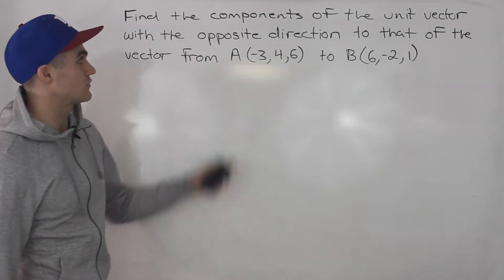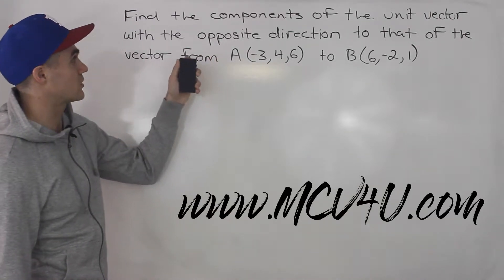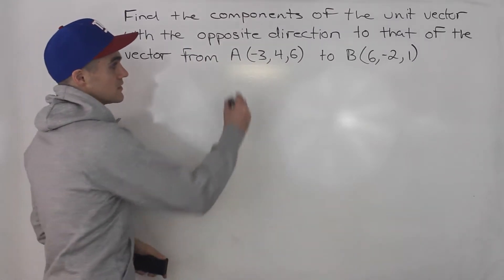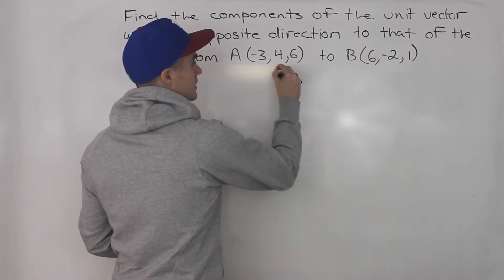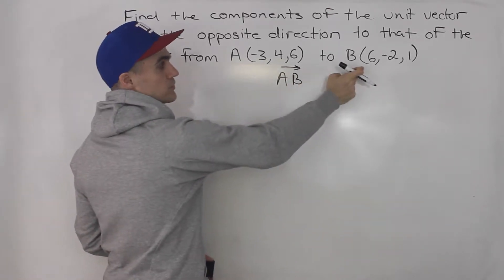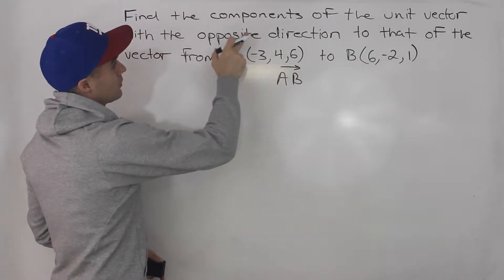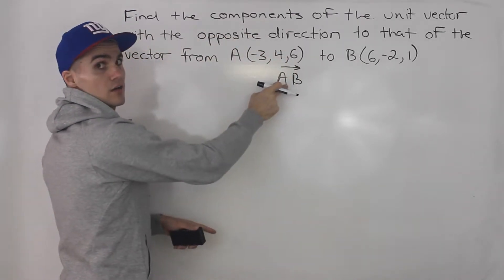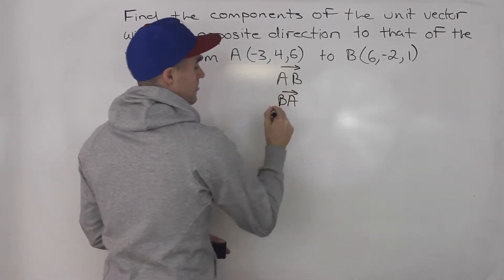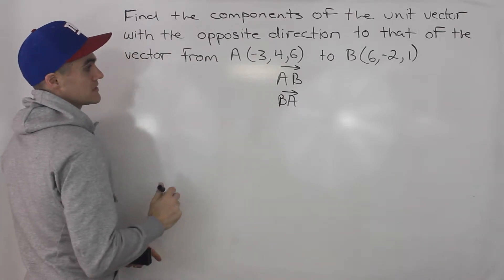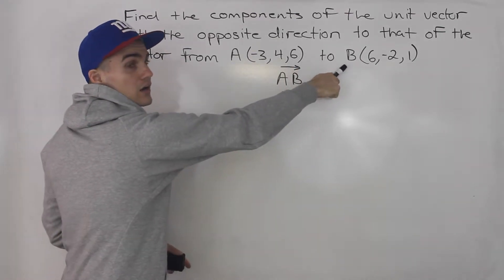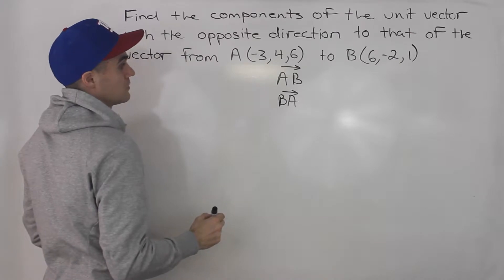Welcome back everybody. Moving on to the next question, we have to find the components of the unit vector with the opposite direction to that of the vector from A to B. So vector AB means the tail of the vector would be at point A and the head would be at point B. But we need to find the unit vector in the opposite direction, so we're finding the unit vector for BA — where the head is at point A and the tail is at point B.